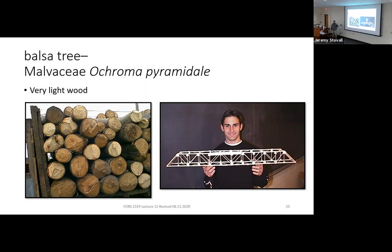During World War II, metals were short due to the war effort and the British were having trouble sourcing aluminum. So they started building wooden aircraft, including a famous fighter plane called the Mosquito — sheets of balsa wood sandwiched between sheets of birch wood. It was pretty successful, so this wood has actually been used in aircraft.